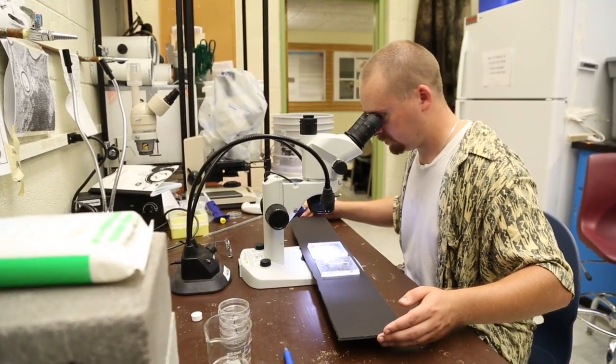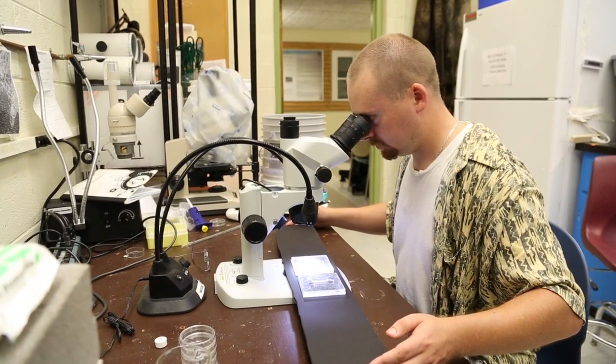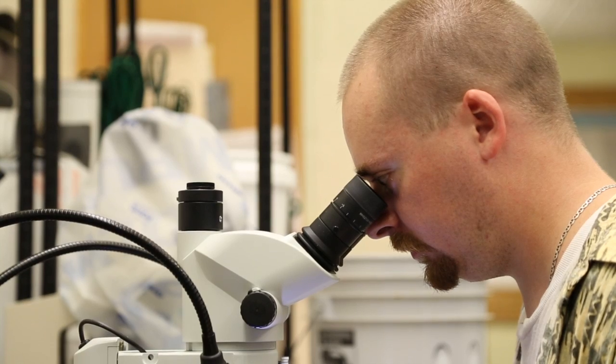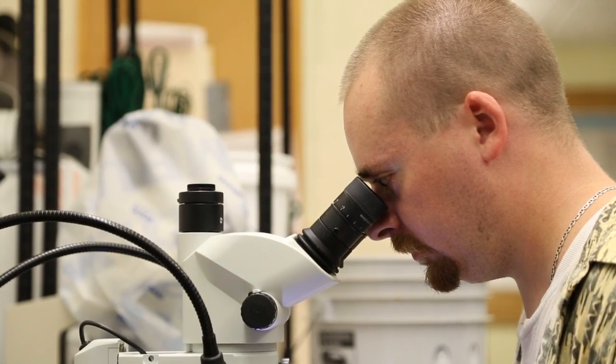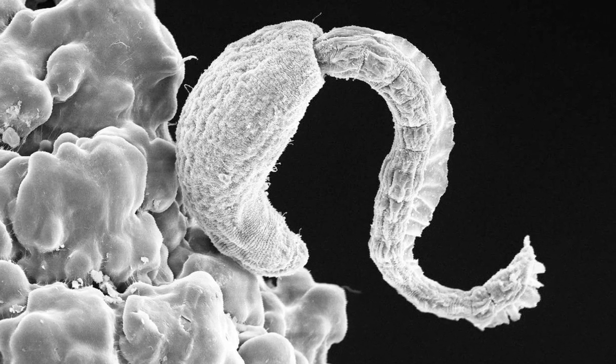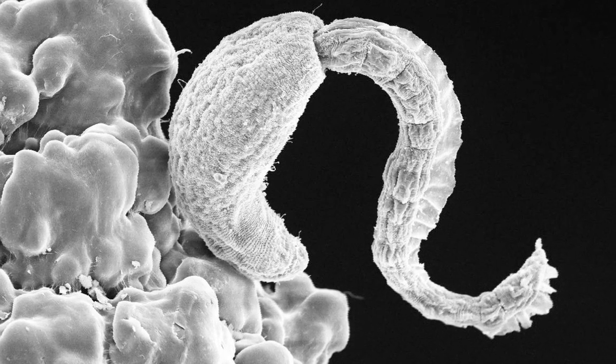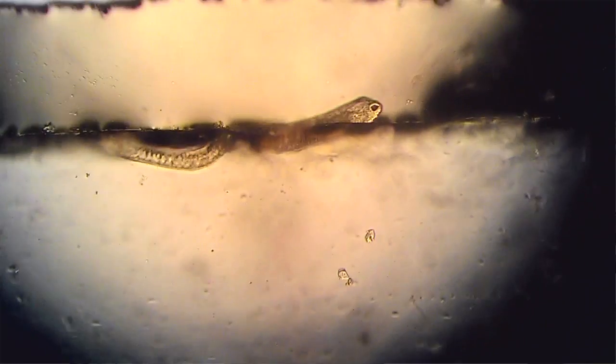What I'm trying to do is see if collagen or gelatin will attract these parasites. Trick it into thinking that this lump of gelatin is actually a snail. And so it will burrow into that lump of gelatin and we can see what it's doing as it's entering.